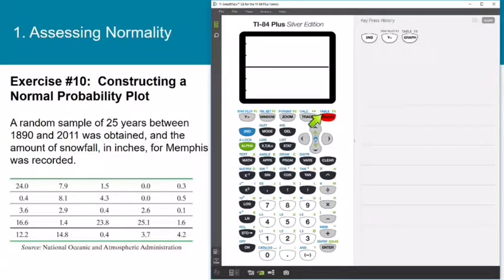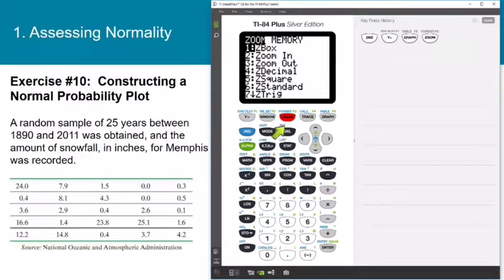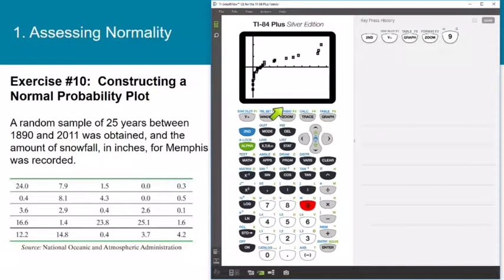Then I will zoom in on the statistical data. I'll do zoom, option 9. Here you can see my normal probability plot. Now there is a definite pattern to it, but it's not a straight line. Therefore we would conclude that the population this sample was pulled from is not a normally distributed population. We would not be able to use the Z table to draw any conclusions or make any predictions about probabilities based on this sample.